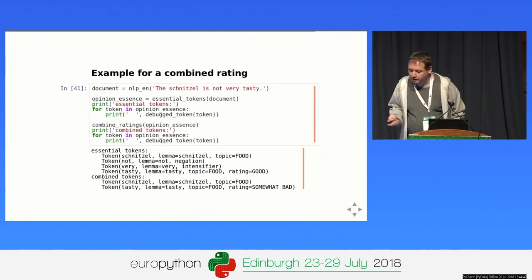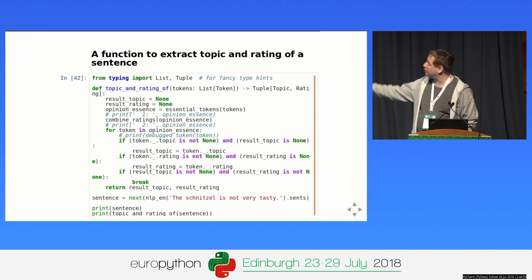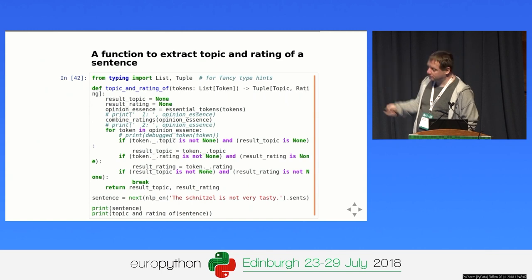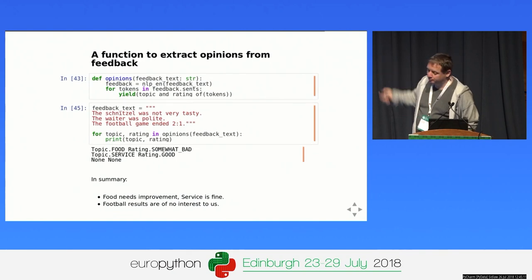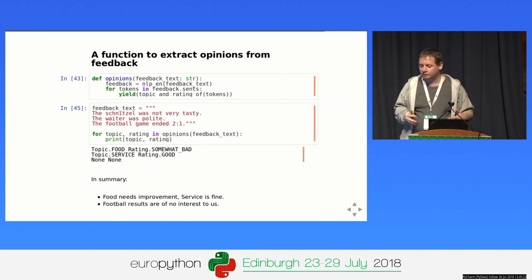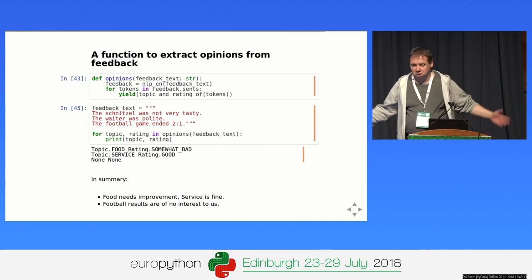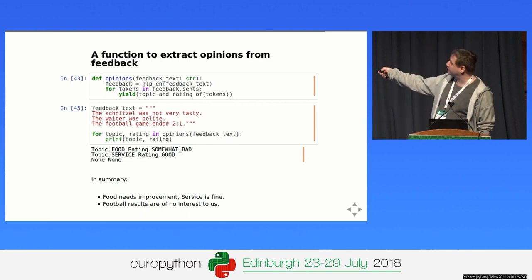From that we can build a function that extracts topics and ratings from a full feedback text. For example, the text 'the schnitzel was not very tasty, the waiter was polite, and the football game ended 2 to 1' produces three sentiments: food with rating somewhat bad (from the schnitzel), service with rating good (waiter was polite), and the football result gets no topic and no rating — so it's ignored.